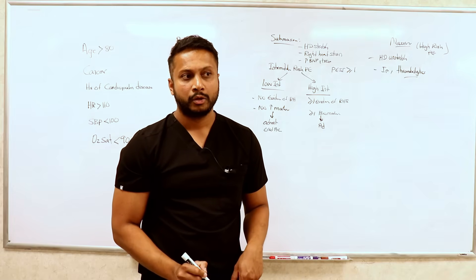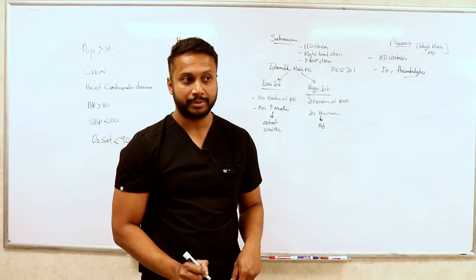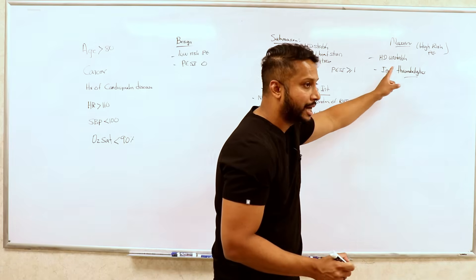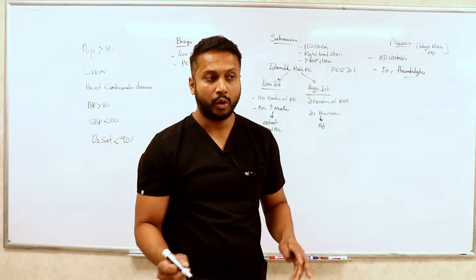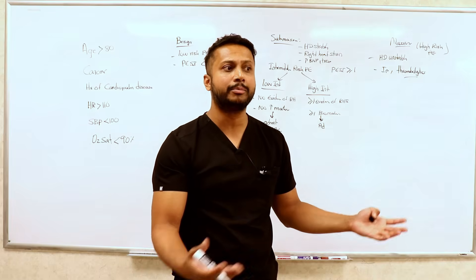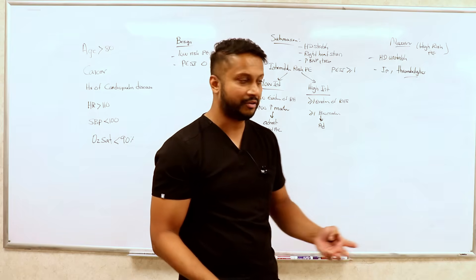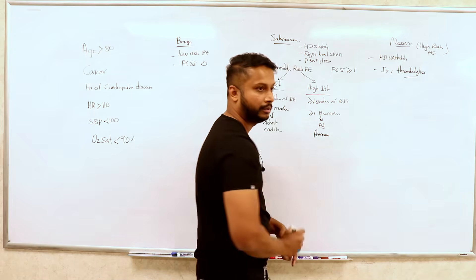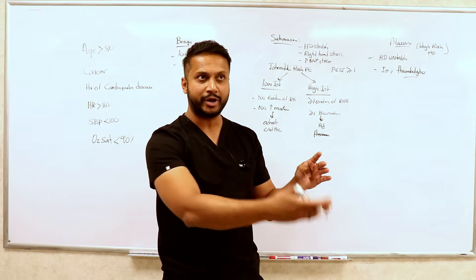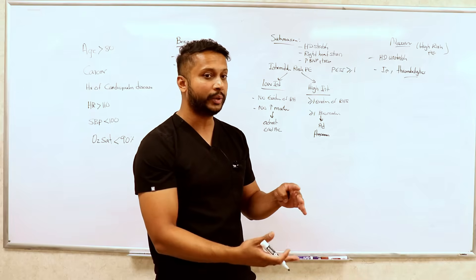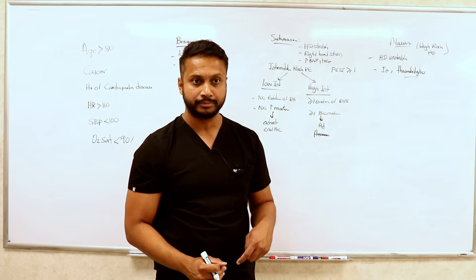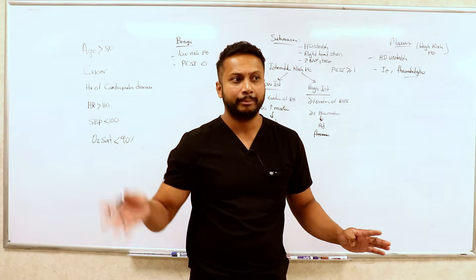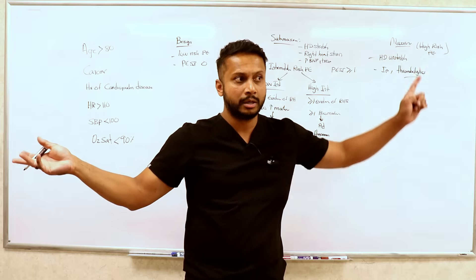For high intermediate, do you start the patient on a DOAC or do you prefer a heparin drip? You prefer starting them on a heparin drip. Why? Because this patient might become massive, or the patient might need a procedure such as a thrombectomy. For that reason, you start the patient on a heparin drip first, see how the patient does, and if you have to do an intervention, do it — then transition to oral anticoagulation.